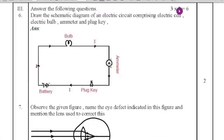Main, answer the following questions. Here, three questions. Each question carries two marks. Sixth question, draw the schematic diagram of an electric circuit comprising electric cell, electric bulb, ammeter and plug key. So, here is the diagram. If you draw this one, you will get two marks.